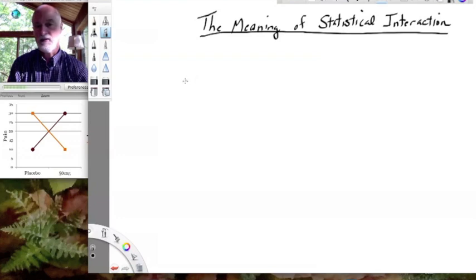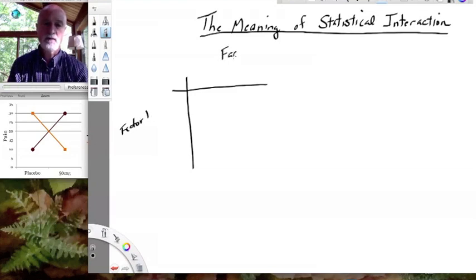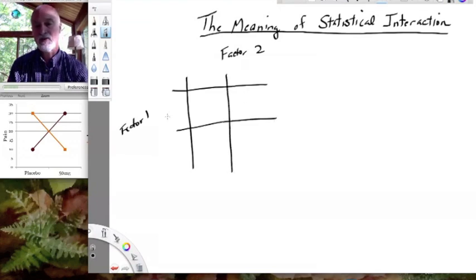The way I want to do that is to go back to our very simple experimental design, where we have two factors. So we have factor one on the left side, we have factor two on the top, and we have just two levels of each one.